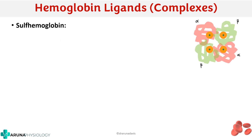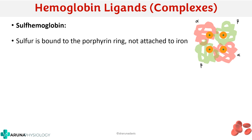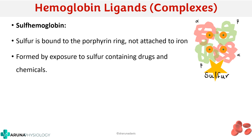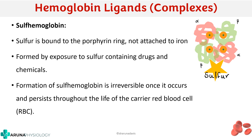The next derivative is sulfhemoglobin. As the name suggests, sulfur is bound to the porphyrin ring — not to the iron but to the porphyrin ring. It is usually formed when hemoglobin is exposed to sulfur-containing drugs or chemicals. Importantly, the formation of sulfhemoglobin is irreversible, so once it is formed it can persist throughout the life of the carrier RBC — that is an important clinical aspect.